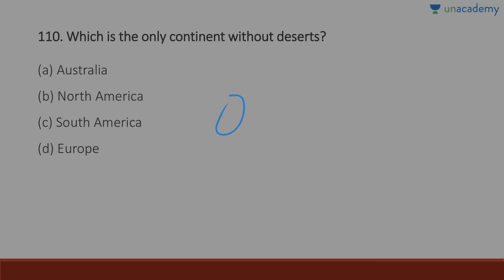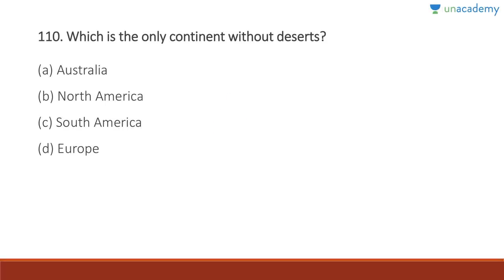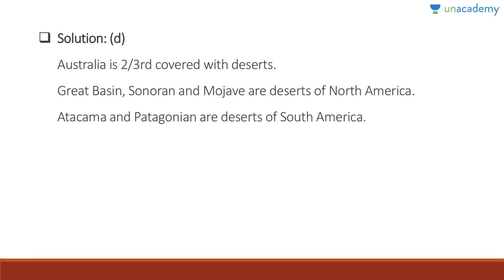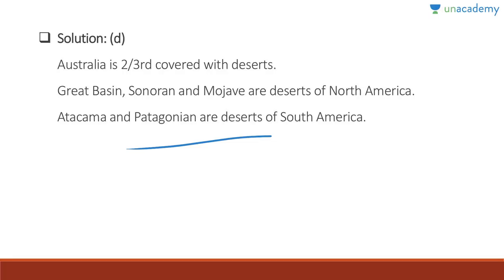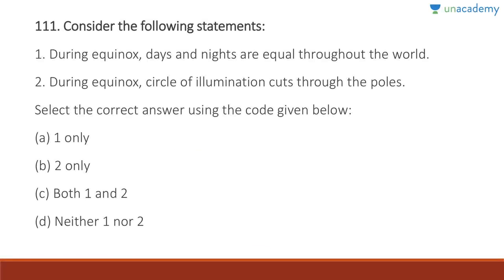Question 110: Which is the only continent without deserts? The answer is Europe. Australia has a lot of deserts; North America has a lot of deserts; South America has deserts including the Atacama and Patagonia deserts. Europe does not have deserts. Australia is almost entirely desert.